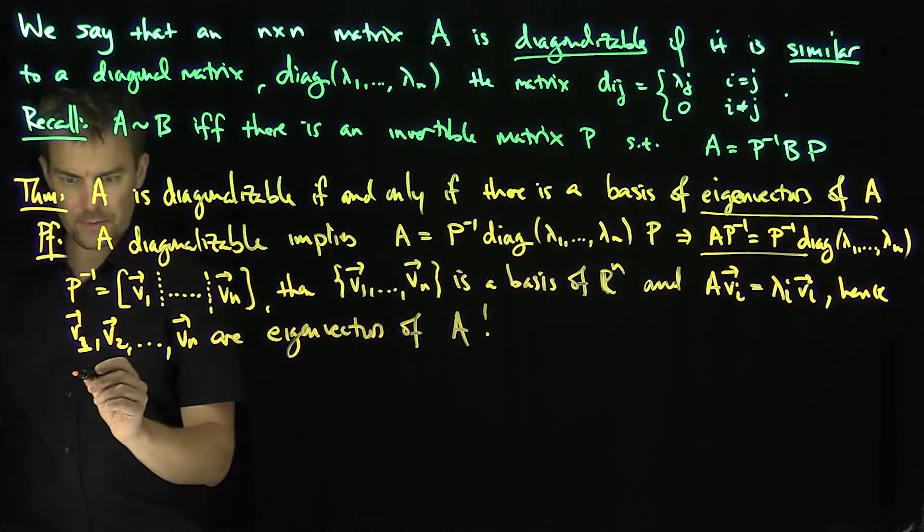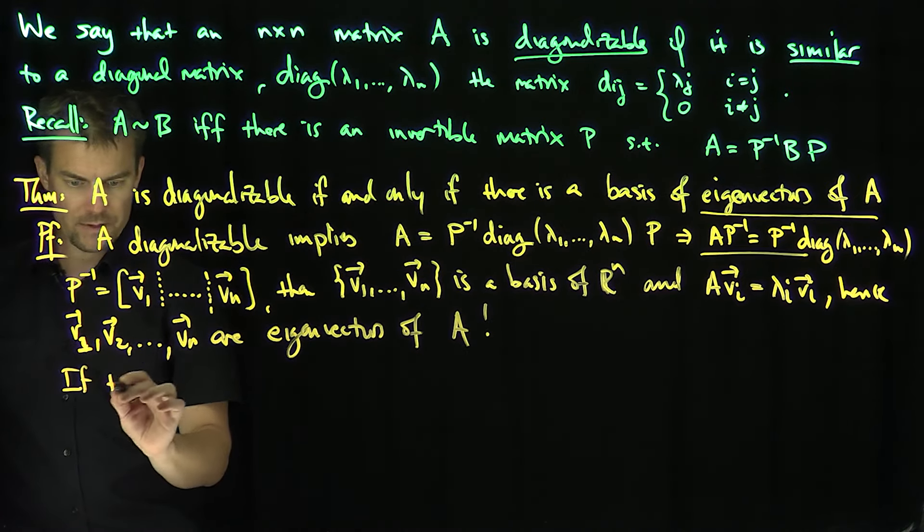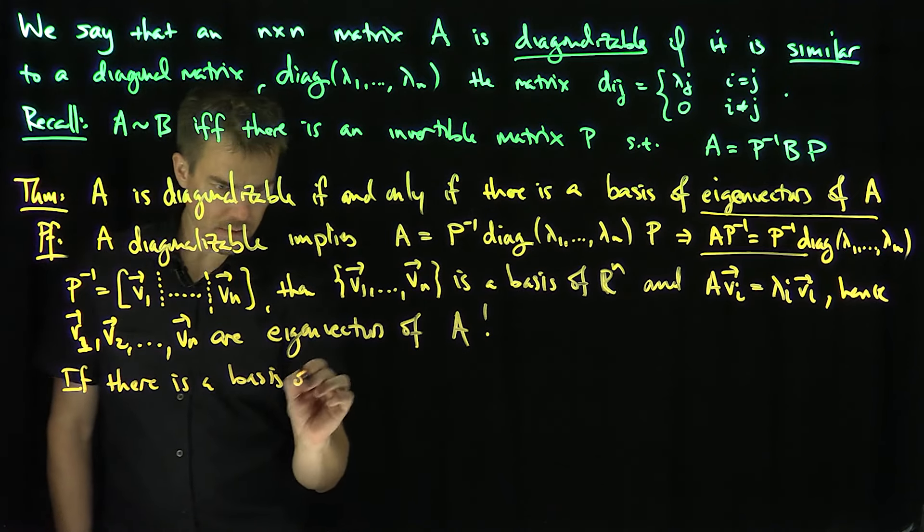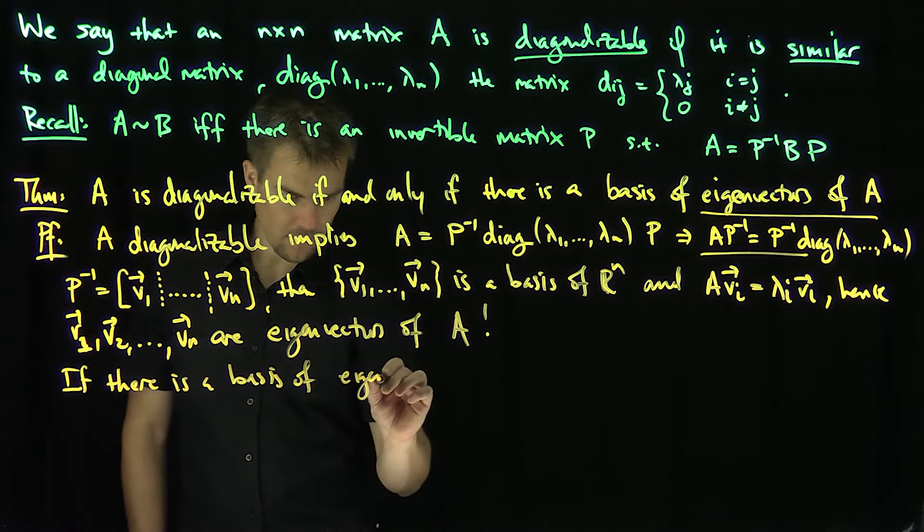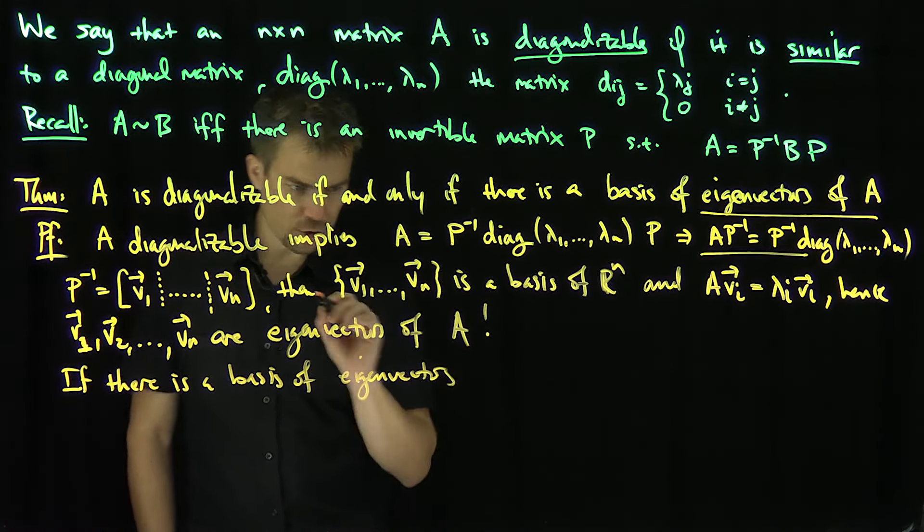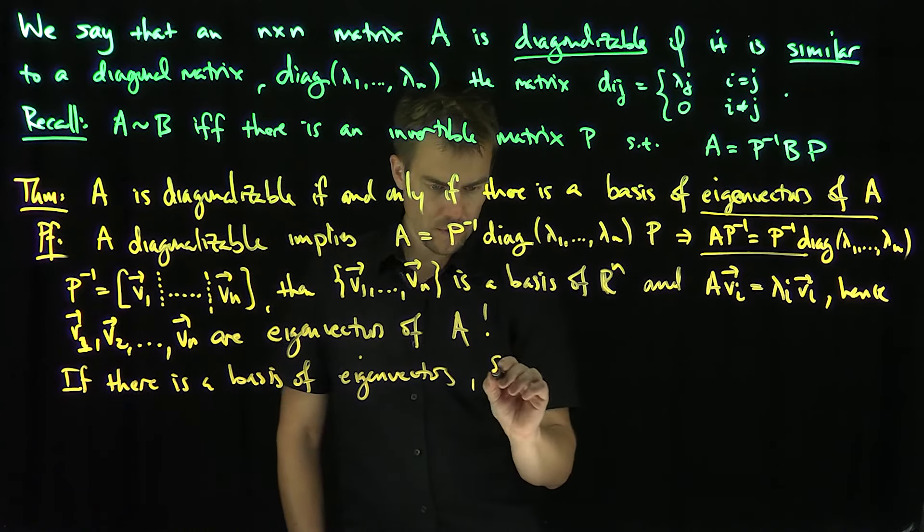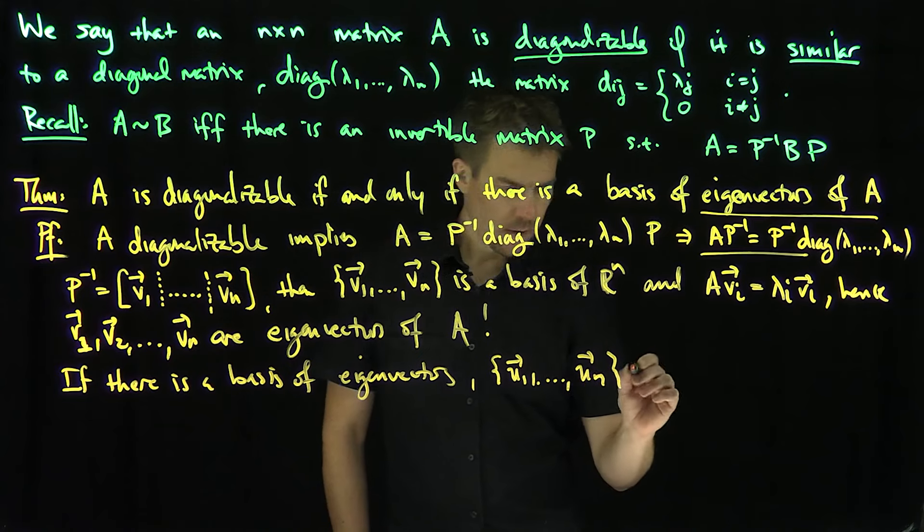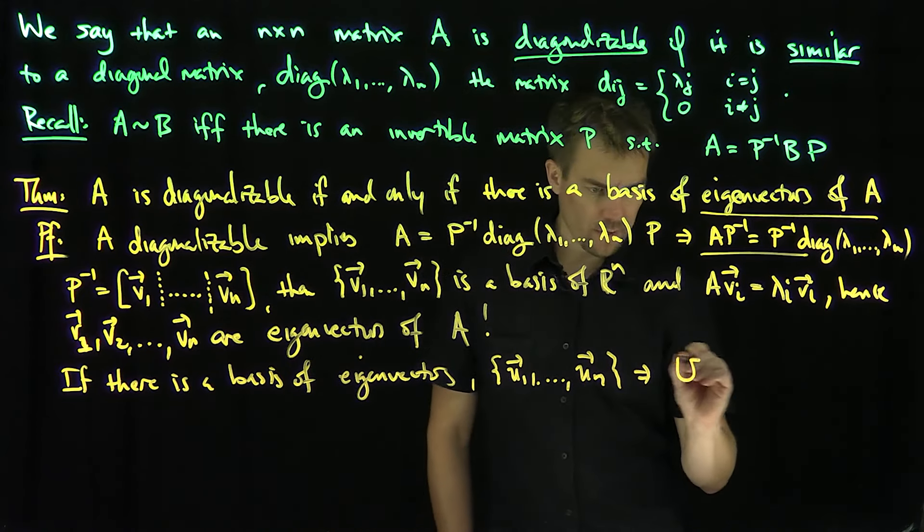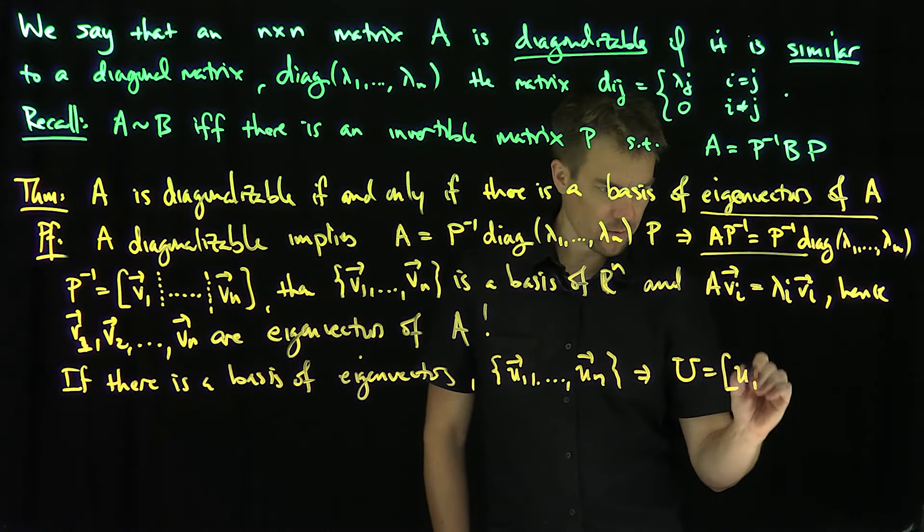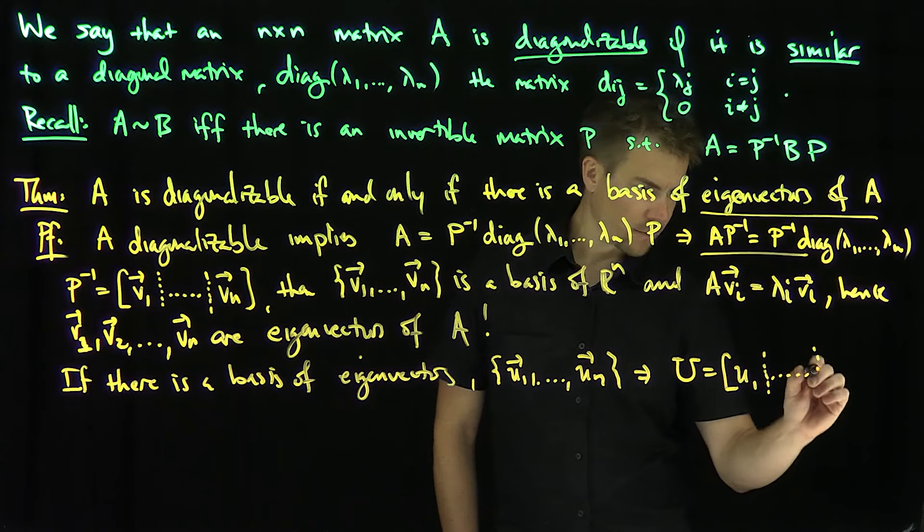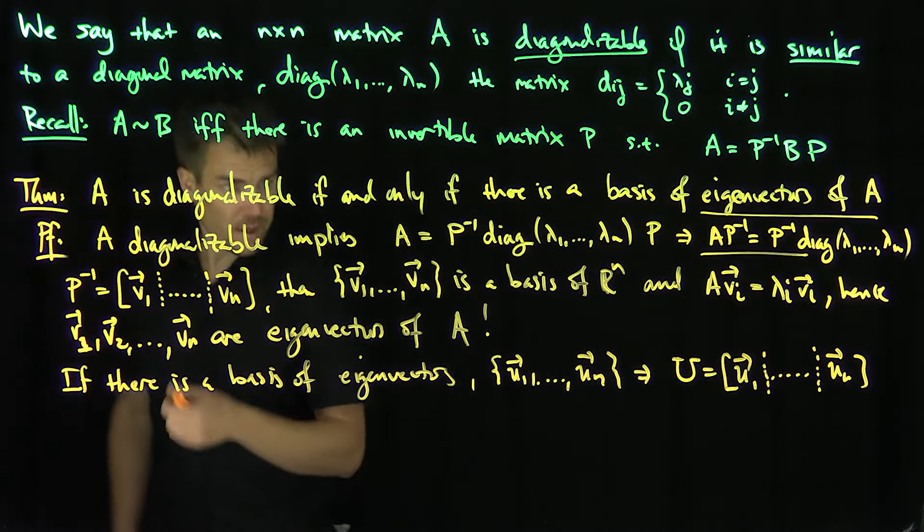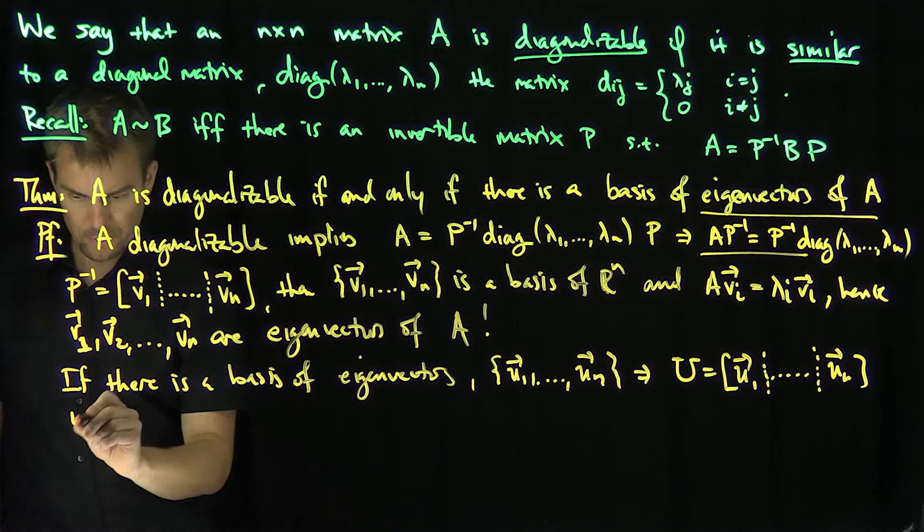If there's a basis of eigenvectors, I'll just change the notation. Say u₁ through uₙ. That implies that the matrix U, which is u₁ all the way down to uₙ, is invertible, because it's a basis.